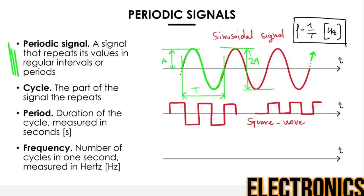Other notable signal types are the triangular signal — whose cycle is a repeating triangle — and the sawtooth waveform.